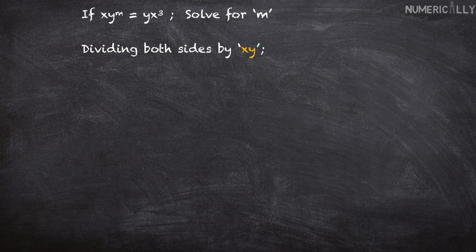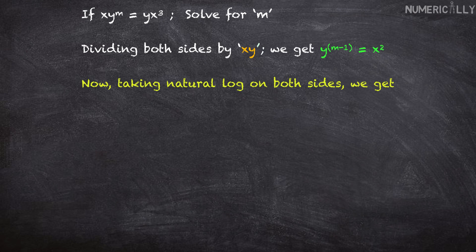Now dividing both sides by xy, we get y to the power m minus 1 equals x squared. We're using the law of exponents. Now taking natural log on both sides, we get